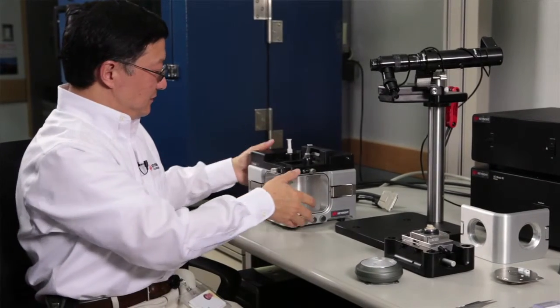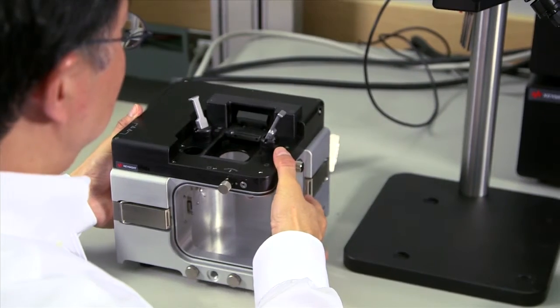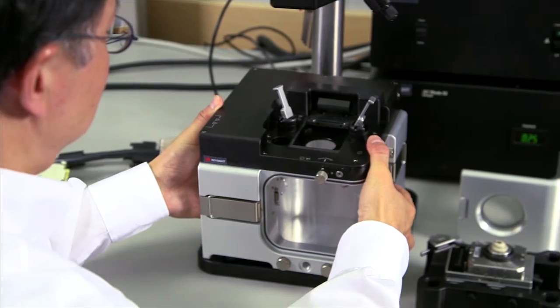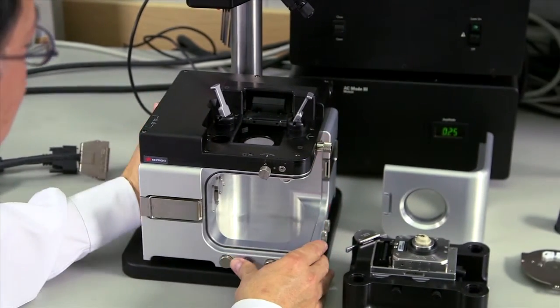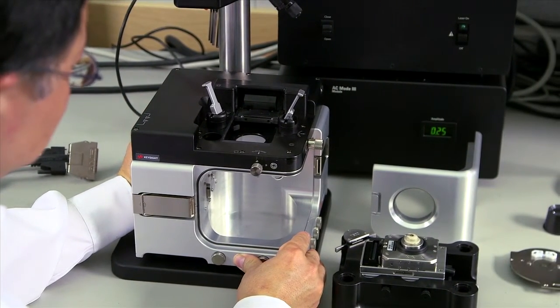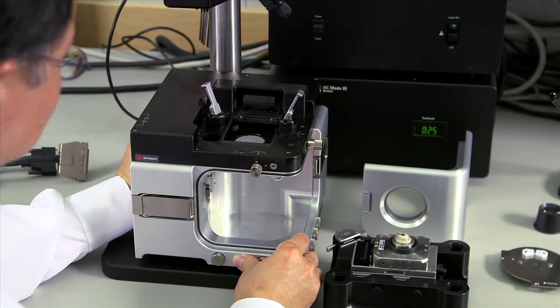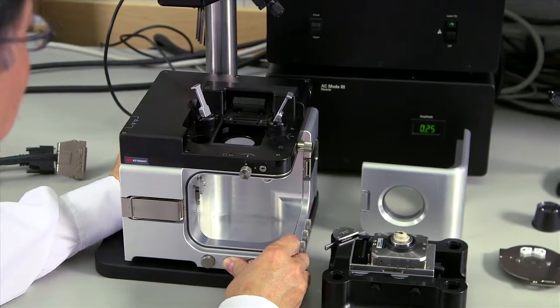The next is to set the AFM body on top of the base plate. And you can slide it back and forth until the legs fall into the four position holes in the base plate.